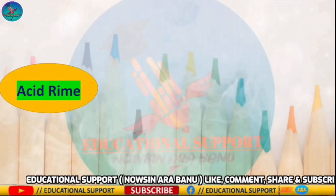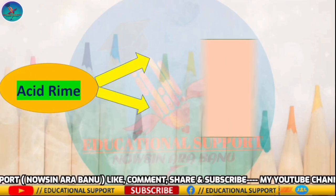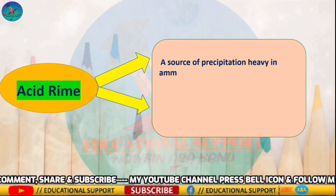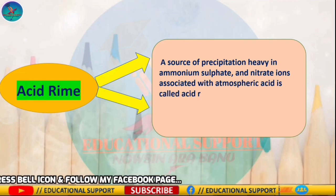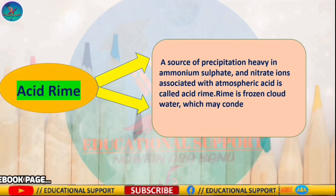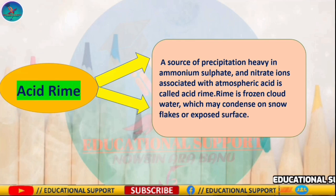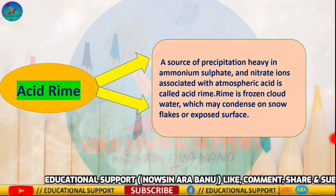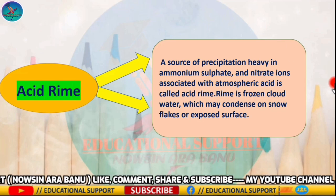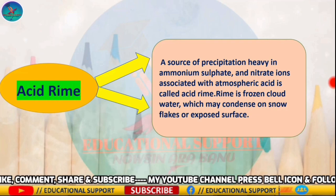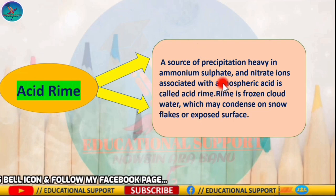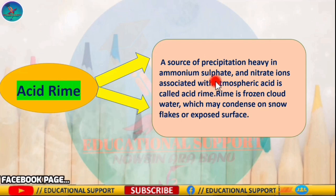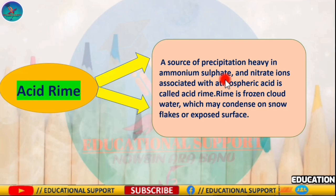What is acid rime? Rime is frozen cloud water which may condense on snowflakes or exposed surfaces. Rime constitutes up to 60% of the snowpack in some mountain areas, and the deposition of acidic constituents with rime may be a significant vector for transfer of acidic atmospheric constituents to the earth's surface in some cases. Acid rime is a form of precipitation heavy in ammonium sulfate and nitrate ions associated with atmospheric acidity.